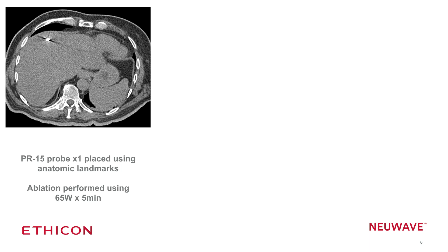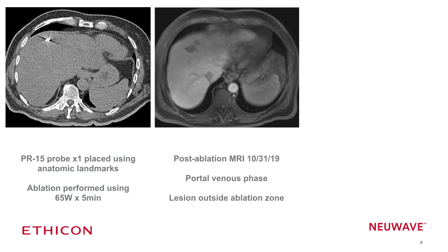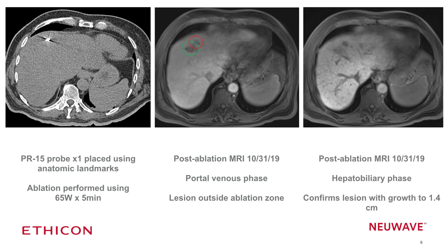We ended up attempting an ablation based on anatomic landmarks, using a single probe placed to our expected location of the lesion, and performed an ablation. On follow-up imaging, we determined we had missed the lesion. The ablation zone, shown in the green circle, is just adjacent to but not engulfing the lesion, which is within the red circle. The lesion meanwhile had continued to grow and was now 1.4 centimeters.